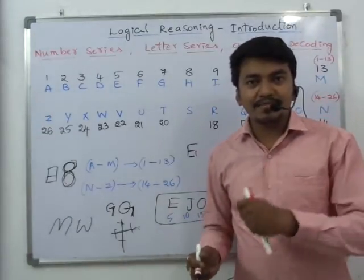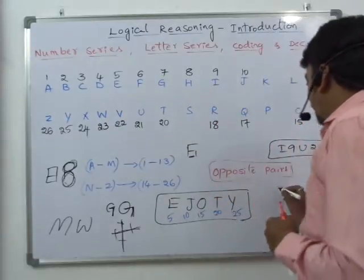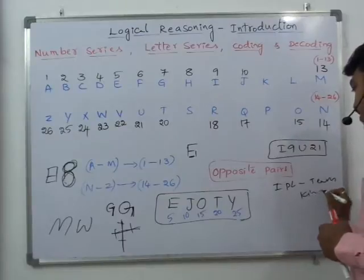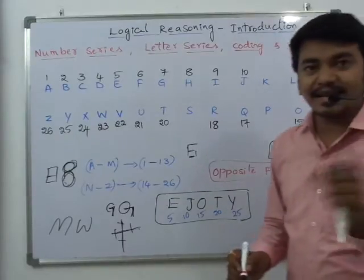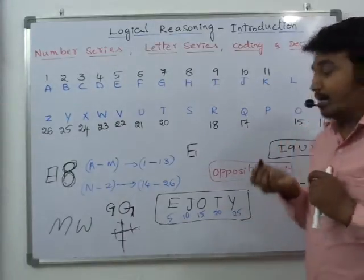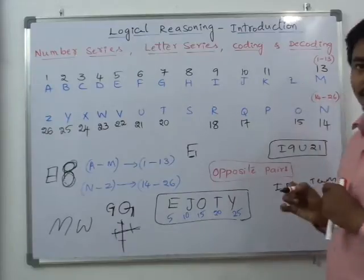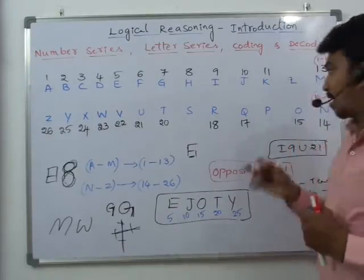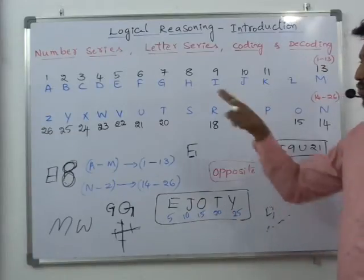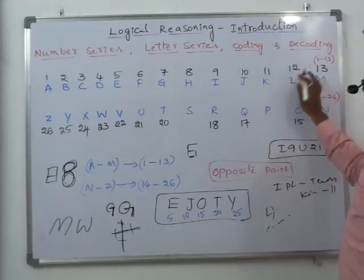The next one is K. You can remember the IPL team Kings 11 Punjab — Kings K, 11. So K is position 11. Now if you see the letter L, it resembles a 2 shape. But 2 is taken, so the next number having 2 as a digit is 12. So L is 12.